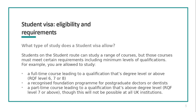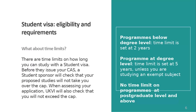What kind of study can you do on a student visa? You can do a range of courses, but they need to meet certain requirements including minimum qualification levels. You can study a full-time course that leads to a qualification at degree level or above — RQF level 6, 7, or 8 — or a recognised foundation programme for postgraduate doctors or dentists. In some cases you can also do a part-time course at RQF level 7 or above, though this is not possible at all UK institutions. You also need to be aware that there are time limits under the student route.